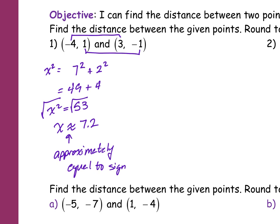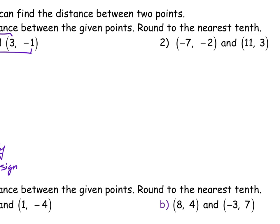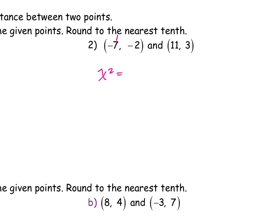So now let's go to number 2. I want to find X squared — how far is it between negative 7 and 11 on my number line? Negative 7 is how far from zero? Seven. And 11 is how far from zero? 11. And 11 plus 7 is 18. So it's 18.